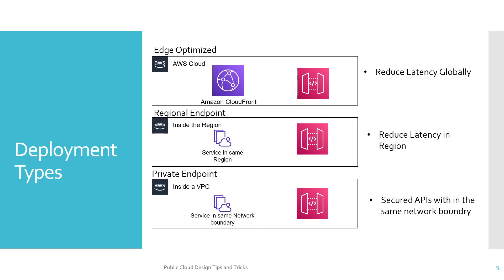The second deployment type is the regional endpoint, where organizations or developers can host their own CDN within the same region, which also helps reduce latency for consumers within that region. The third is the private endpoint, which is a more secured approach required when accessing APIs from private consumers that should not be exposed to the public. In that case, it must run within the organizational network boundary, and that is where private endpoint deployment comes into picture.